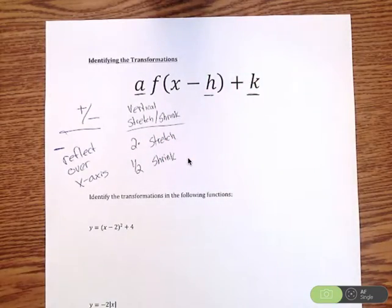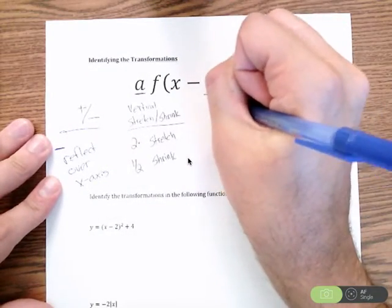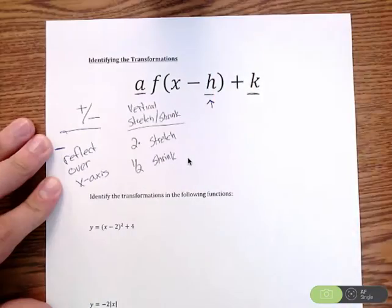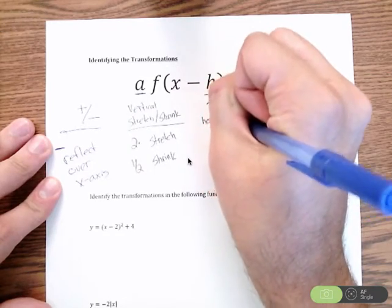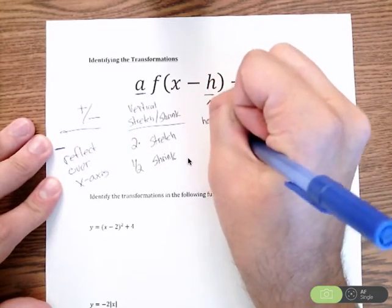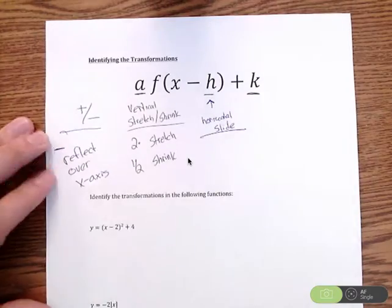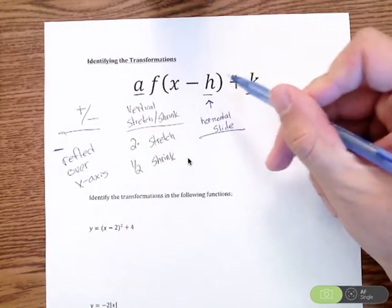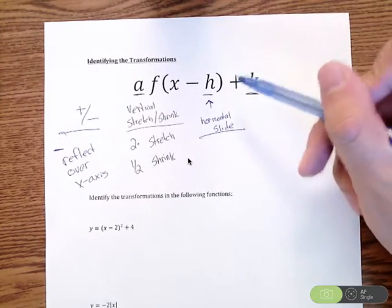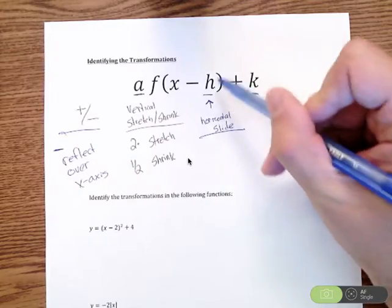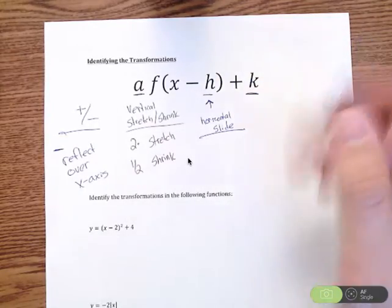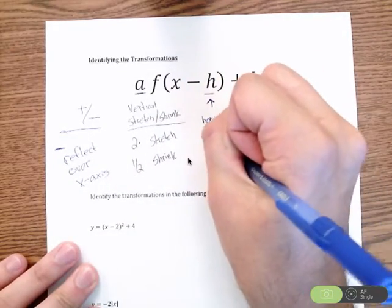The next transformation we're going to talk about is H, which is your horizontal translation or you could talk about a horizontal slide. So H is very, very deceiving. I often say that it kind of lies to you. So you're looking for what's inside the parentheses.